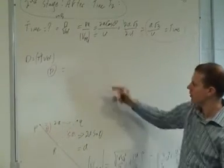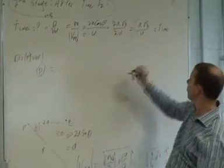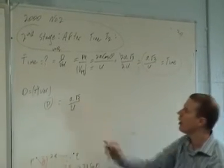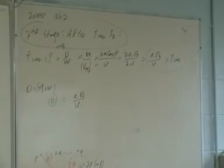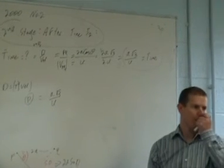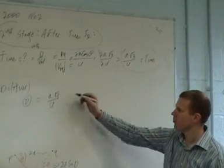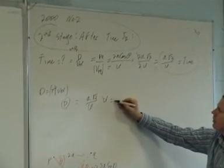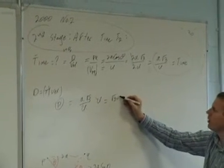P was moving for a time of A root 3 over U. And how quickly was P moving in the second stage? Was it moving at U? He was moving at speed U. U's cancel. So the distance that this guy traveled in the second stage is root 3A.